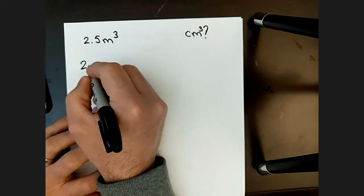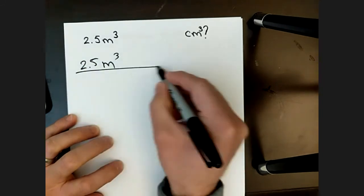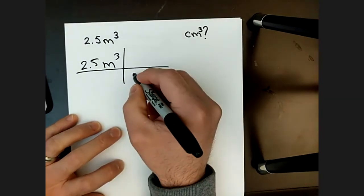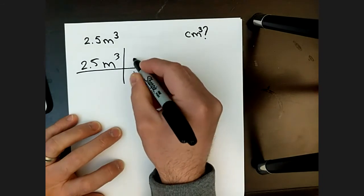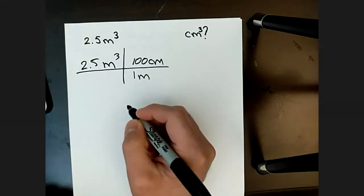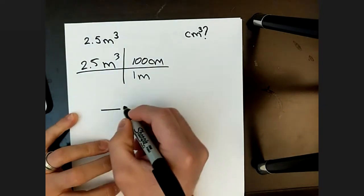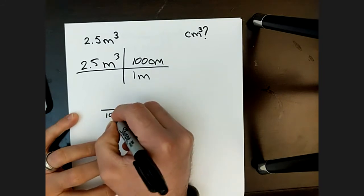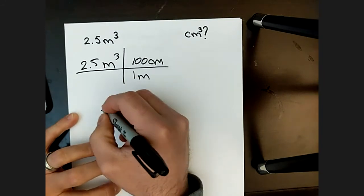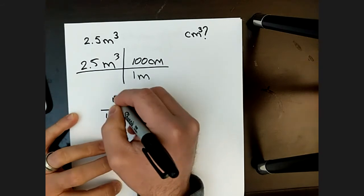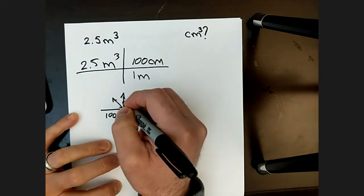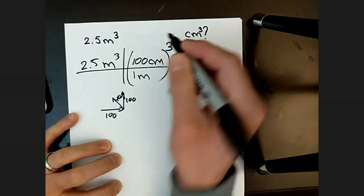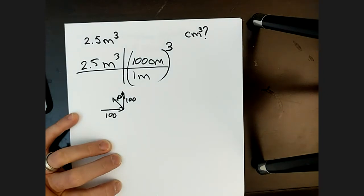If we have 2.5 meters cubed, and I want to convert to centimeters cubed. Well, we know that in one meter, there's a hundred centimeters. So this is the single dimension. It's a single dimension, but we just have to apply this to the other two dimensions or the three dimensions. So what you end up doing is just cubing the whole conversion.